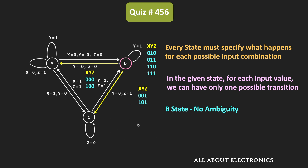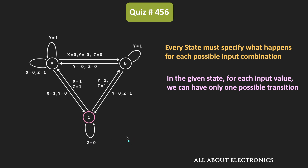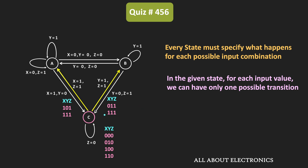Let's check state C. When Z is equal to 0, the machine remains in the same state, with X and Y being either 0 or 1 — four input combinations. The C to A transition occurs when X and Z are equal to 1, with Y either 0 or 1, giving combinations 1,0,1 and 1,1,1. The C to B transition occurs when both Y and Z are equal to 1, with X either 0 or 1, giving combinations 0,1,1 and 1,1,1.